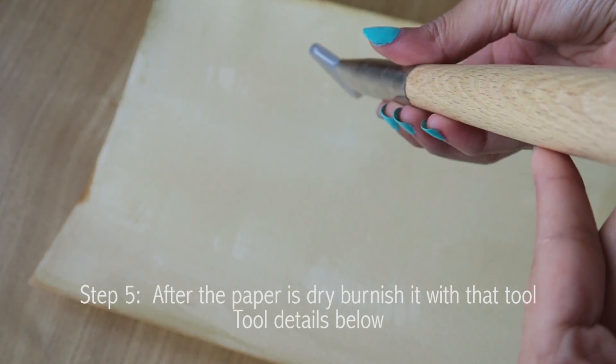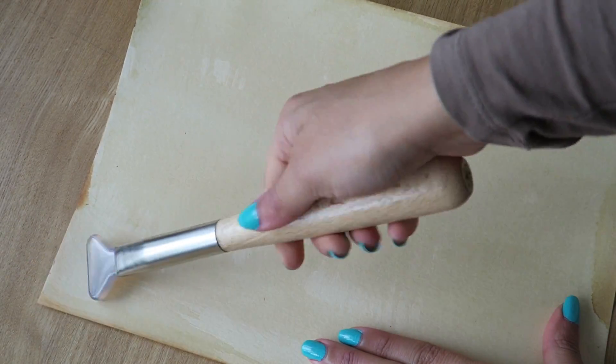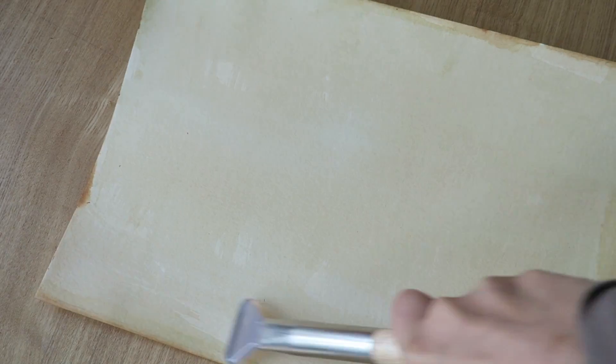When the egg whites is dry or almost dry, you need to burnish the papers with an agate burnisher to close off some of the paper pores for a very smooth line work.